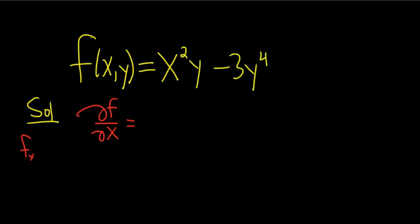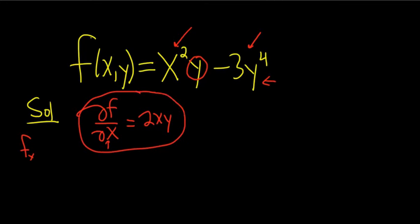Now we have to treat all of the y's as constants when you take the partial with respect to x. So this y here will hang out, and we just take the derivative of x squared. We get 2xy, and the y is like a number, a constant, it hangs out. And this derivative here will be 0 because there's no x, so it's like a constant. So the derivative is 0. That's the partial with respect to x.